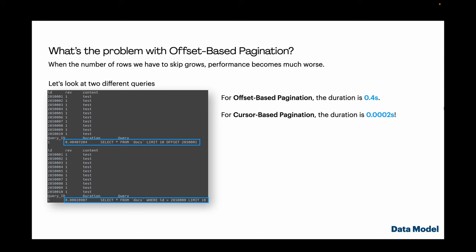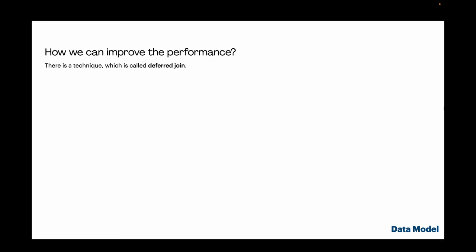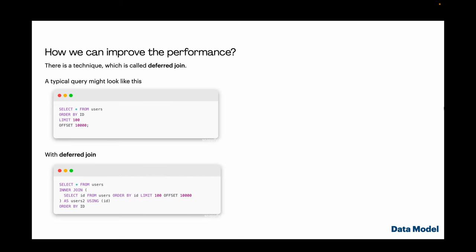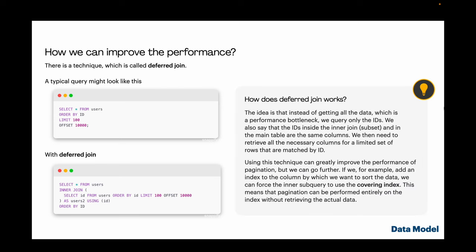Offset-based pagination has a problem: as the number of rows to skip increases, performance deteriorates. Comparing two queries: with offset-based pagination the duration is 0.4 seconds, while with cursor-based pagination it's only 0.0002 seconds. If we still need offset-based pagination, we can employ a deferred join technique. The concept is to query only the IDs instead of all the data, which avoids the performance bottleneck – we specify that the IDs in the inner join subset and the main table are the same columns.